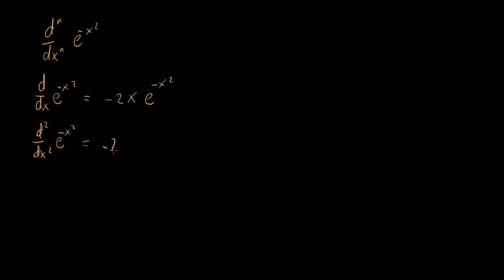So what's going to happen? We're going to get minus 2 e to the minus x squared plus 4x squared e to the minus x squared. Because we're going to have first term differentiate the first guy, leave the second guy there. Second term, leave the first guy there, differentiate the right hand guy.